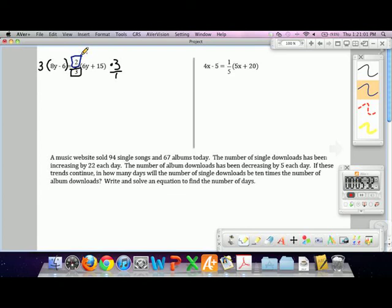So by multiplying both sides - notice I multiplied both sides, not just one number on the side. I multiplied the entire side by the denominator. And what that's going to allow us to do is to create this new equation. 3 times 8y minus 6 equals 2, because that's still in the numerator, times 6y plus 15.